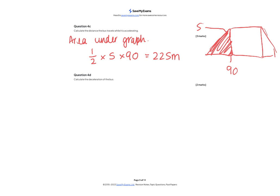Part 4d: calculate the deceleration of the bus. Again, it is change in velocity divided by time. The change in velocity is 5 metres per second, and this time the deceleration takes 40 seconds, giving 0.125 metres per second squared.